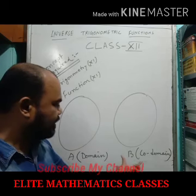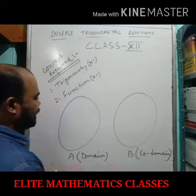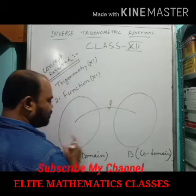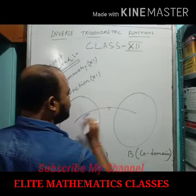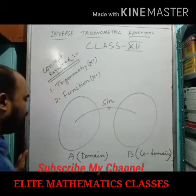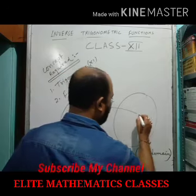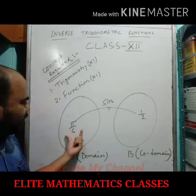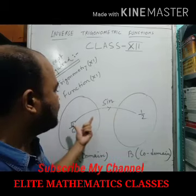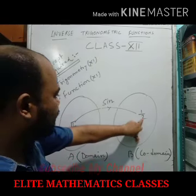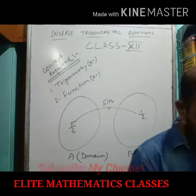Two sets A and B — A is called the domain of the function and B is called the codomain. Now let us take a function f from set A to set B. Say f is replaced by the trigonometric function sine, and here we take 5π/6. We know the value of sin(5π/6) is 1/2. So the image of 5π/6 under the function sine is 1/2. Now the question is: what is an inverse trigonometric function?